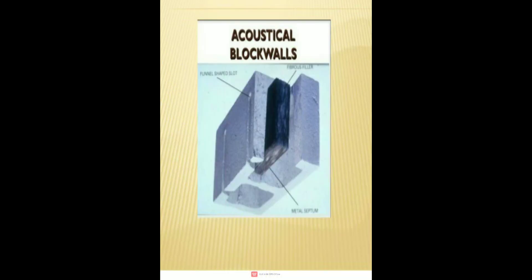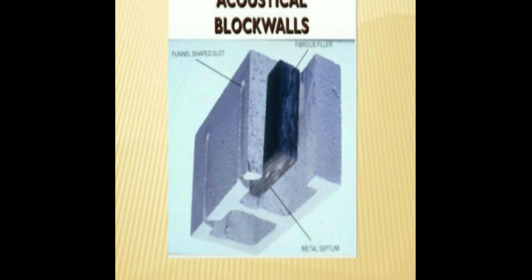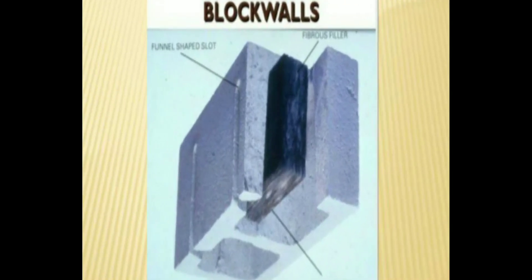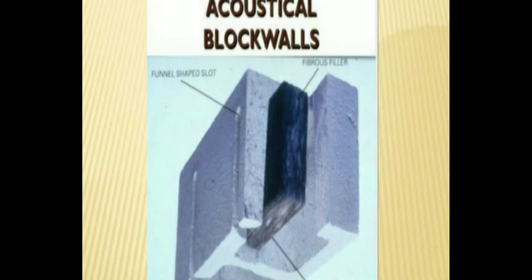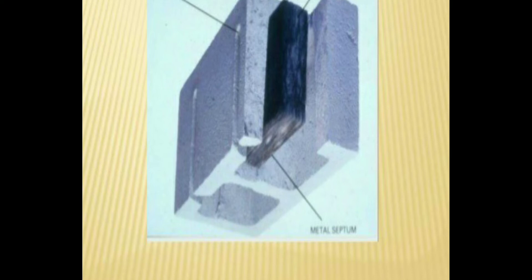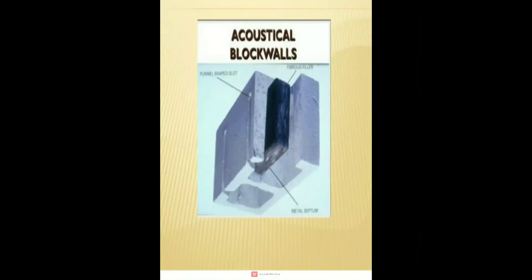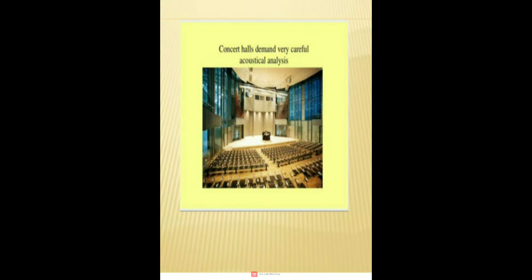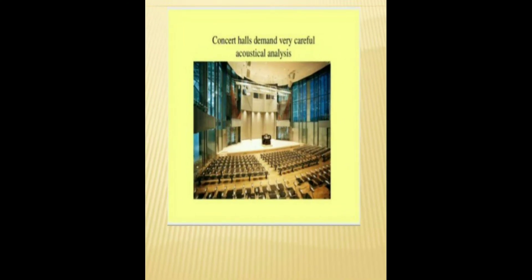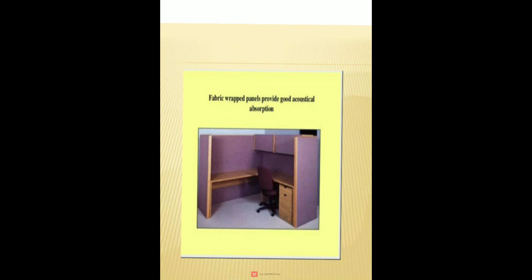This is the pictorial view of acoustic block walls, in which a funnel-shaped slot and fibrous fillers are present between the metal sections. This is also the pictorial view of a concert hall in which the acoustical design is very carefully done. The fabric wrap panel provides good acoustical absorption.